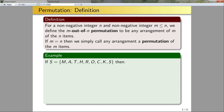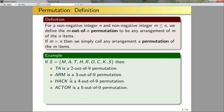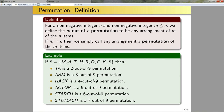Consider the set S that includes the elements m, a, t, h, r, o, c, k, s. For this set I can talk about various m-out-of-n permutations. For instance, 't, a' would be a 2-out-of-9 permutation — there are 9 elements in S and 't, a' consists of two of these elements taken and put in some order. Similarly, 'arm' would be a 3-out-of-9 permutation; 'hack' a 4-out-of-9; 'actor' a 5-out-of-9; 'starch' a 6-out-of-9; 'stomach' a 7-out-of-9. The string 'math rocks' would be a 9-out-of-9 permutation.